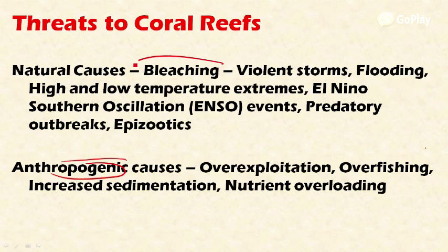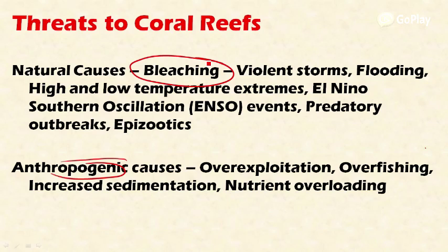The first natural cause is bleaching — the process of discoloration of the coral reefs due to the death of zooxanthellae present in them. Zooxanthellae are the microscopic algae in the coral reef, and their death leads to discoloration of the coral reefs, which is called bleaching.